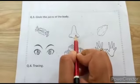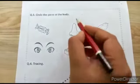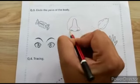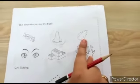What is this? This is nose. Nose part of the body hai? Yes. So, we will circle it.